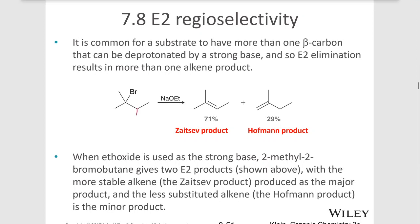So if there is more than one beta hydrogen available, in other words the alpha carbon has the leaving group attached — in this case the bromine — and the beta carbon on the right has two hydrogens, and on the left we have two beta carbons with three hydrogens each. So it actually doesn't matter which of those six hydrogens we pull off — we'll get the same product for the left.